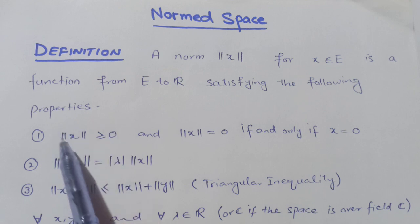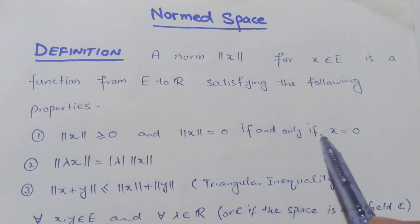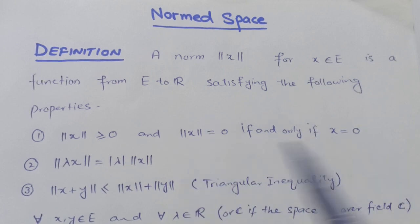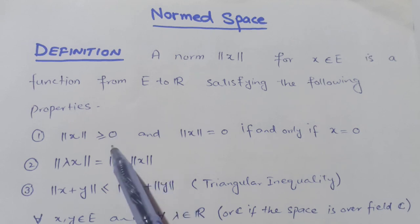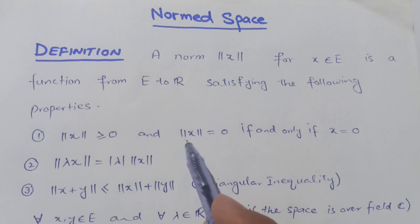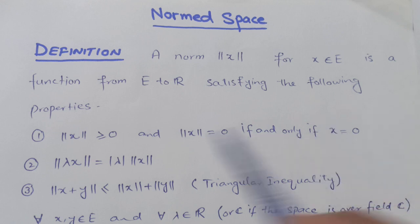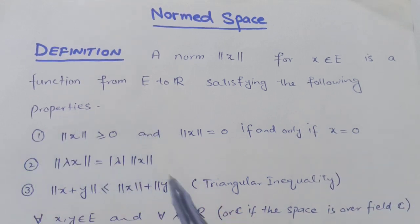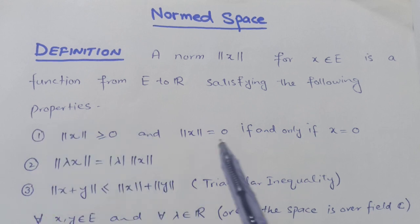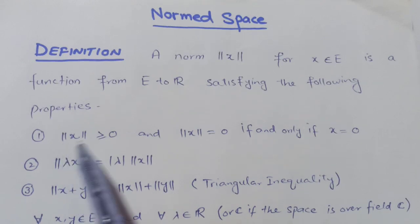A few authors write the non-negativity property as the first property and ||x|| = 0 if and only if x = 0 as a second property, giving four properties total. Here I have written them as three properties. If we exclude the property ||x|| = 0 if and only if x = 0, then the remaining three properties form a semi-norm.